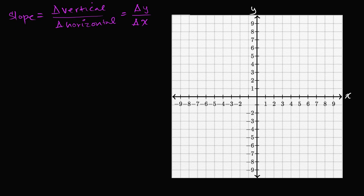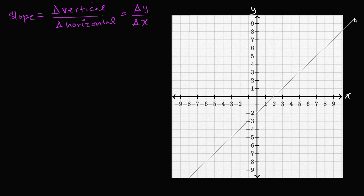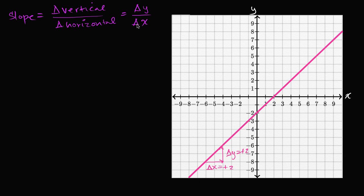I could draw something with a slope of one. A slope of one: as x increases by one, y increases by one. So a slope of one is going to look like this. Notice, as I have a change in x — for example, my change in x is positive two — I'm going to have the same change in y, which is going to be plus two.